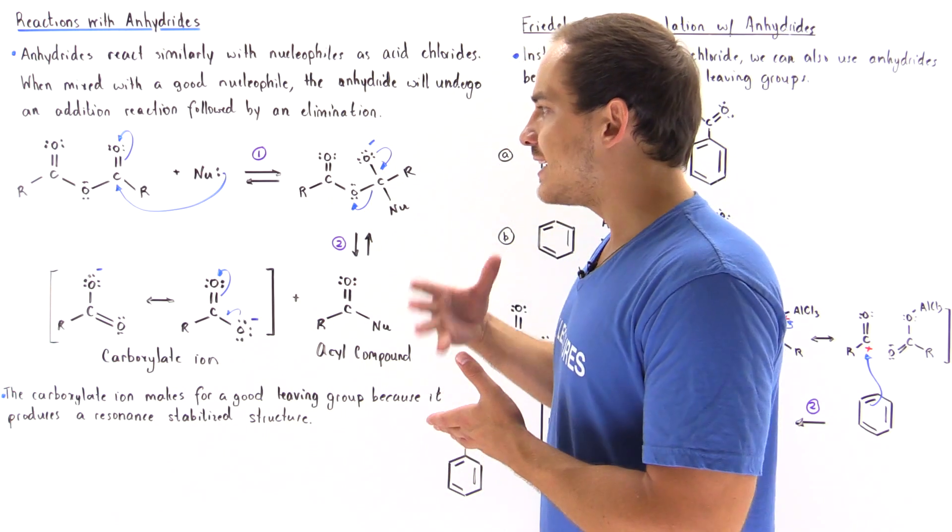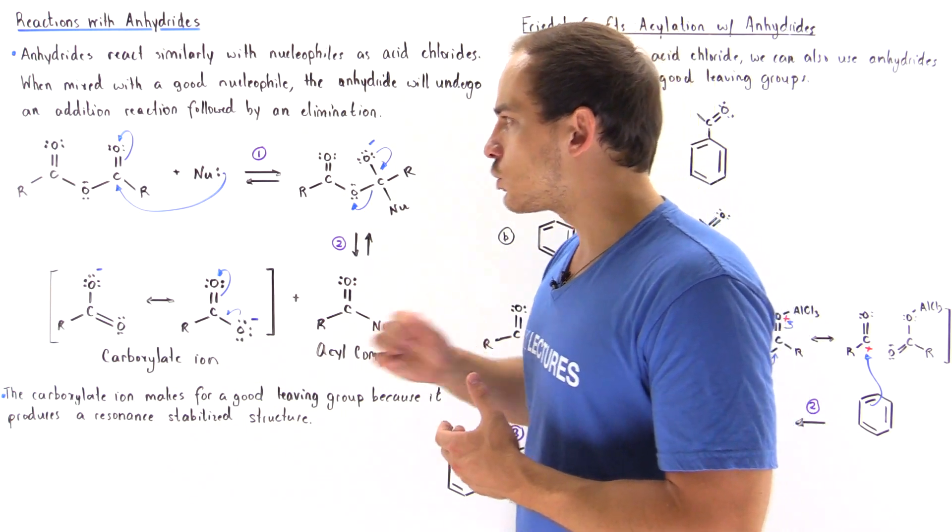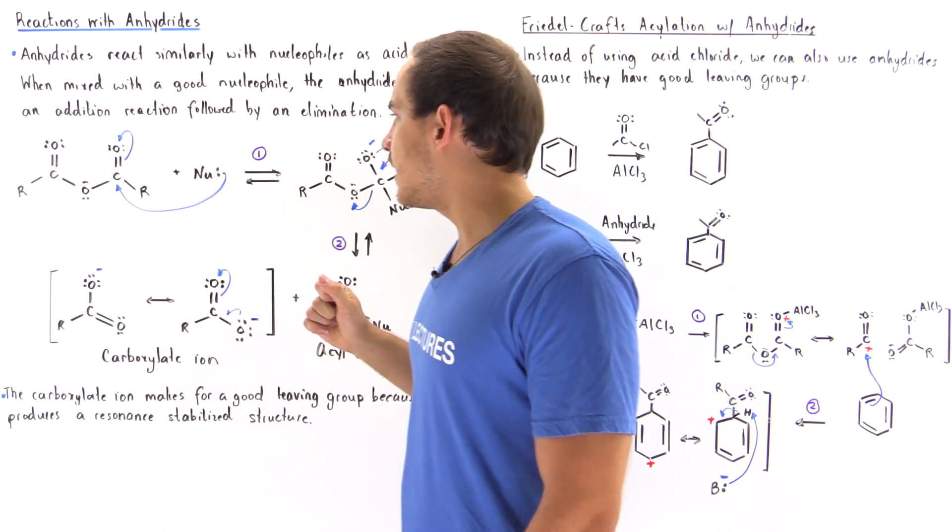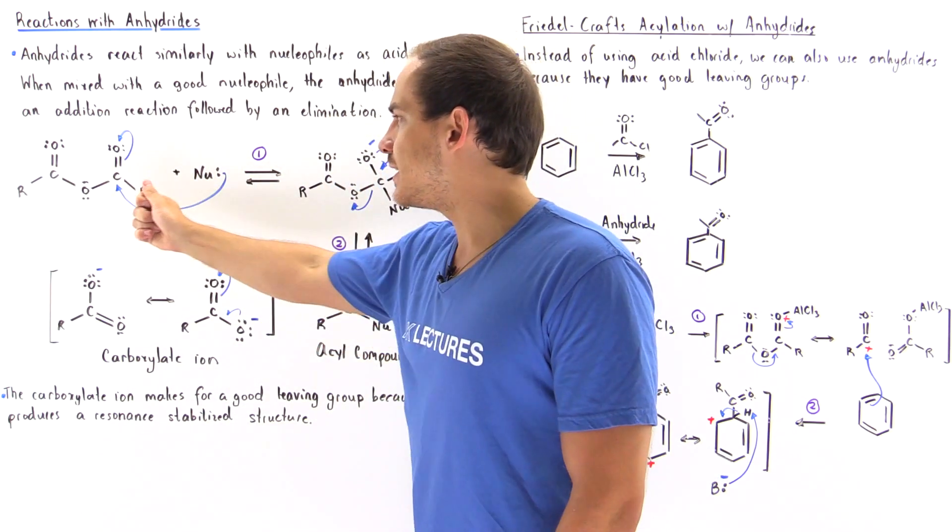Now in our anhydride molecule the leaving group is not the chloride but this carboxylate ion. So in the first step, in the addition step,